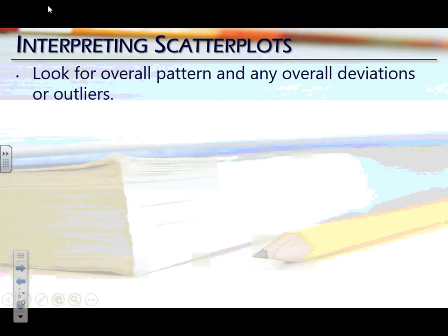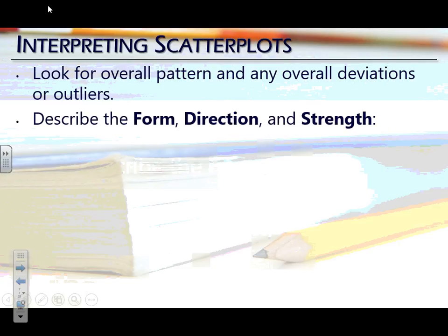Anytime we get a graphical display, we have to know how to analyze and describe it — how to pull out the pertinent information and report it. When we interpret scatterplots, we look at the overall pattern and look for any deviations or outliers. With histograms and other displays, we used shape, center, spread. With scatterplots, working with two variables, the terminology changes to form, direction, and strength. Every time you are asked for a description of a scatterplot, you have to mention all three.